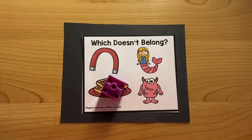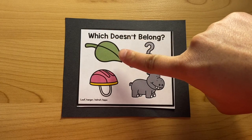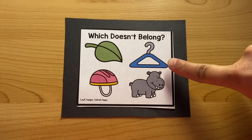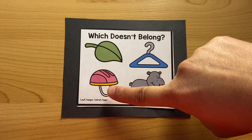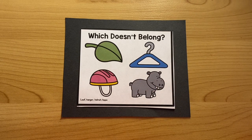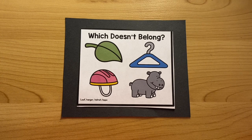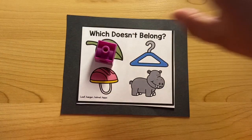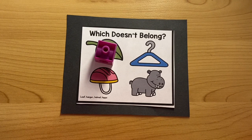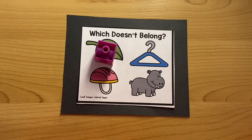Next one. Leaf. Hanger. Helmet. Hippo. Which word doesn't belong? Leaf. That's right. Leaf doesn't belong because leaf begins with the sound L. And the rest of the words begin with the sound H. Good job.